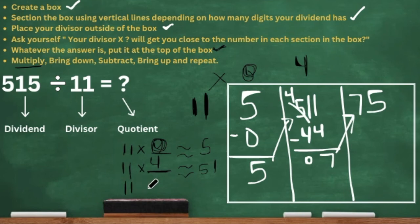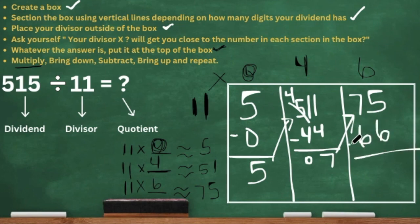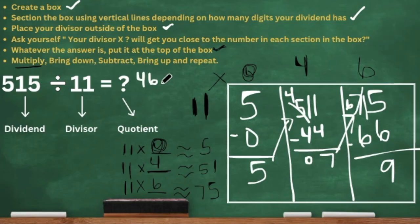We repeat again. 11 times what number gets us close to 75? Six, because 11 times 6 is 66 and we can't go over 75. We put 6 at the top, multiply: 6 times 11 is 66. Now we subtract — we need to regroup again. Borrow from the 7, turn that to 6, and make the ones place 15. 15 minus 6 is 9. That 9 can't go anywhere, so it's our remainder. Our answer is 46 remainder 9.